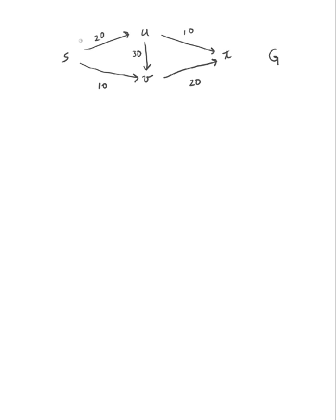To do this algorithm, the first thing you do is assign an actual flow of zero to all of our edges. From this flow network, I compute the residual graph. The residual graph has the same nodes, and when computing my directions, I have to see how much I can still push forward and how much I can undo. In this case, I can push everything forward since I haven't assigned anything — I can just push all of my capacities forward.